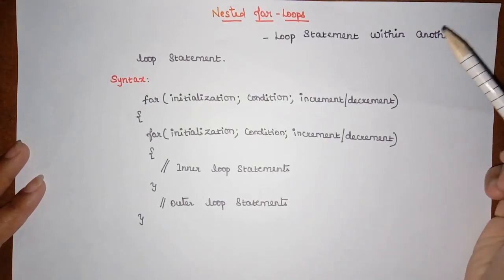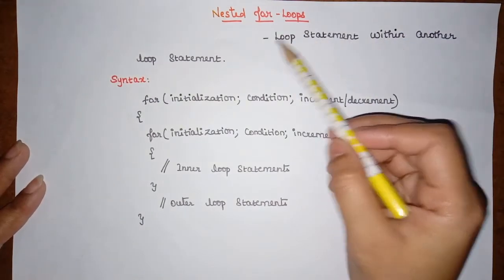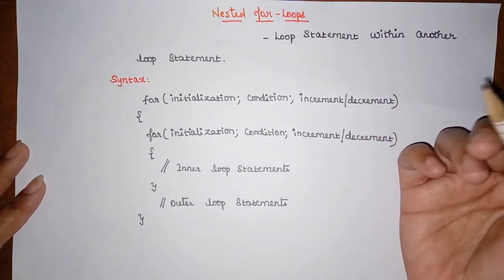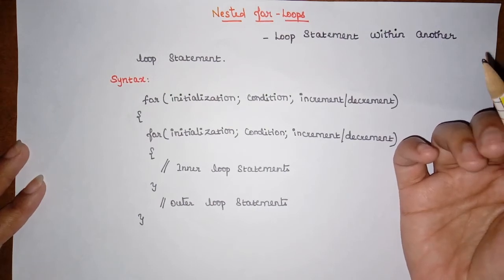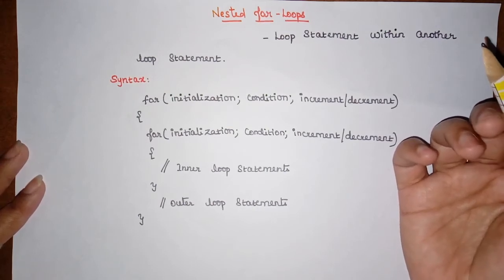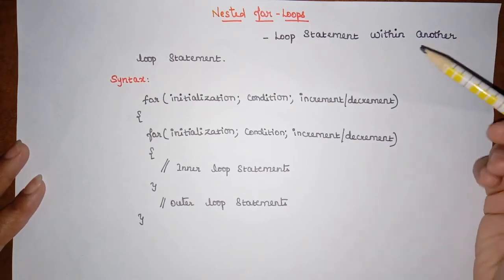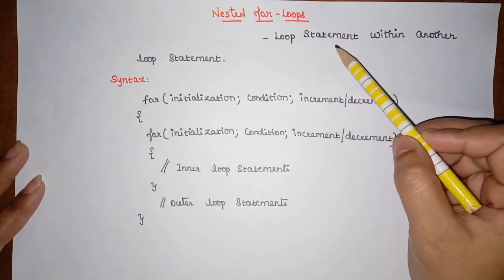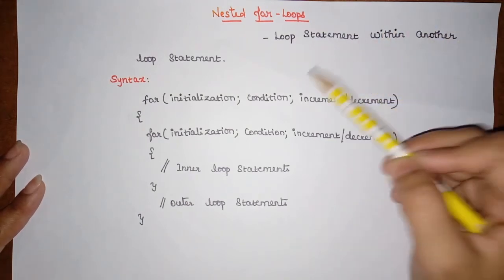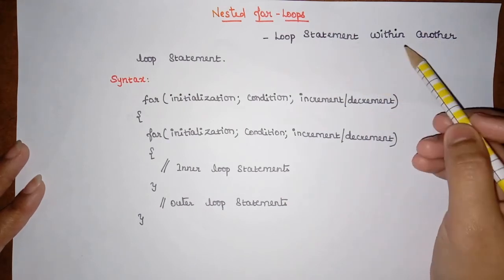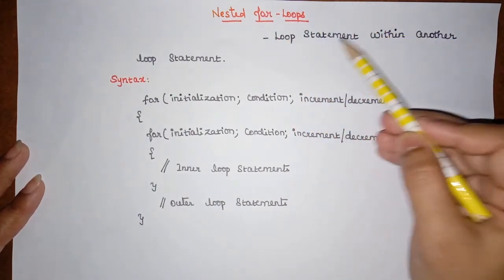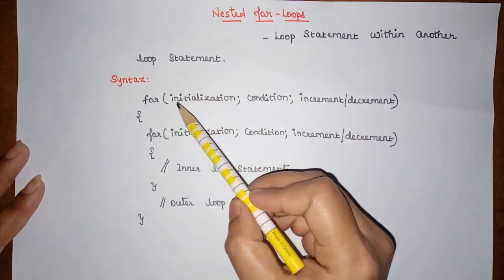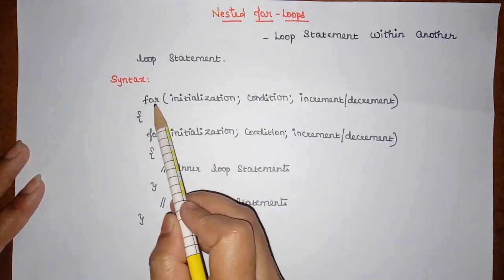Hello all, welcome back. This discussion is about nested for loops. In the previous video we covered the for loop — why we use it and what its syntax is — and we also saw an example. Here we are going to see what a nested for loop is. When a loop statement is present within another loop statement, we call that a nested for loop. A loop within another loop is called a nested for loop.